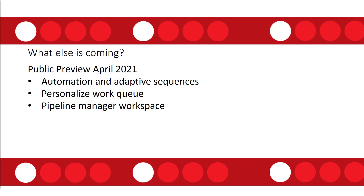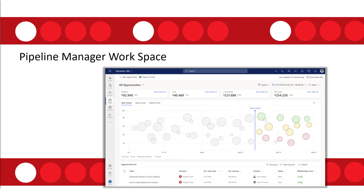We're also going to have sequence forks, which represent the ability for the system to pick the next step in a sequence based on a trigger. Sequence listeners will also be added, allowing the system to listen to certain email engagement actions — such as a customer opening an email, viewing an attachment, or clicking a link. Additionally, there is the pipeline manager workspace. As I understand it, this is not a new app but an actual workspace that users can access through the Sales Hub, available later this year.